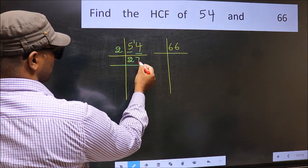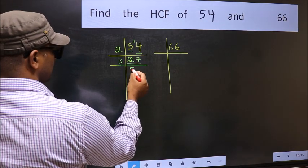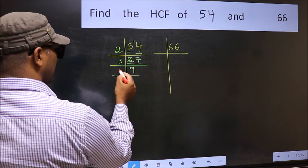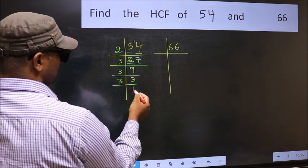Now 27 divided by 3, 3 times 9 is 27. 9 divided by 3, 3 times 3 is 9. Now 3 is a prime number, so 3 times 1 is 3.